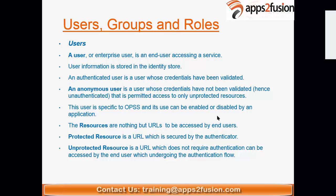Let's say I have two applications built in my middleware stack — one is slash ABC and another is slash XYZ. I am protecting my slash ABC URL, which leads to an application website — that becomes a protected resource. Slash XYZ will become an unprotected resource. Out of 500 users in my organization, 300 are authorized to access slash ABC. The other 200 will be called anonymous users — they will not be able to access slash ABC, but they will have access to slash XYZ.